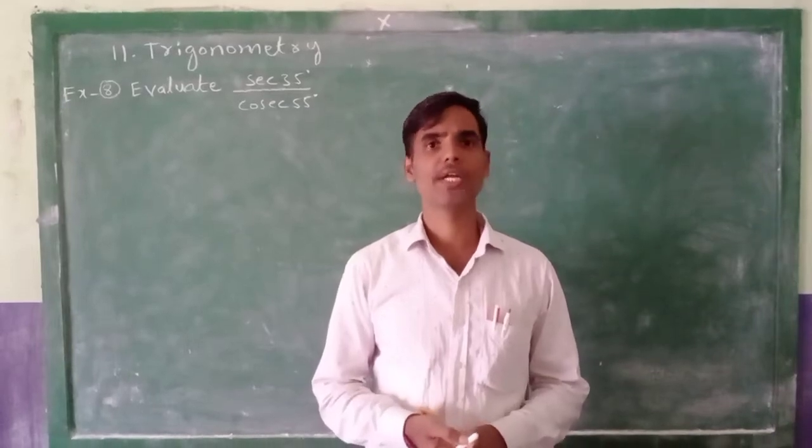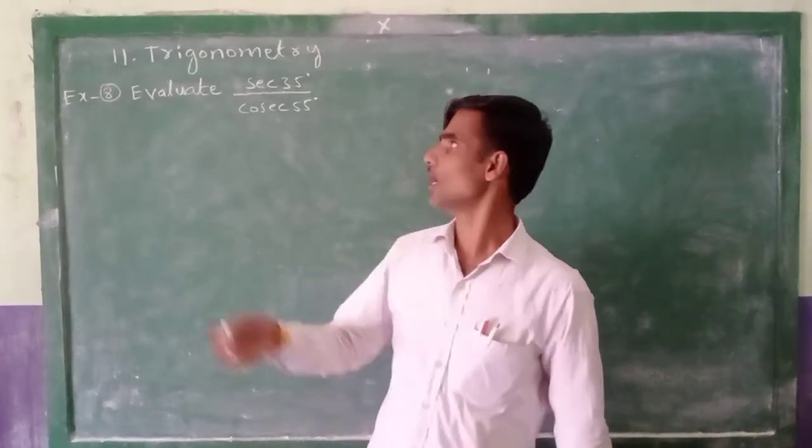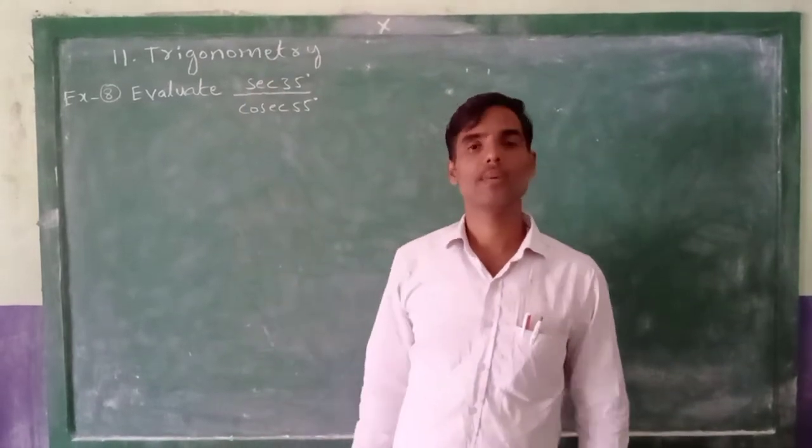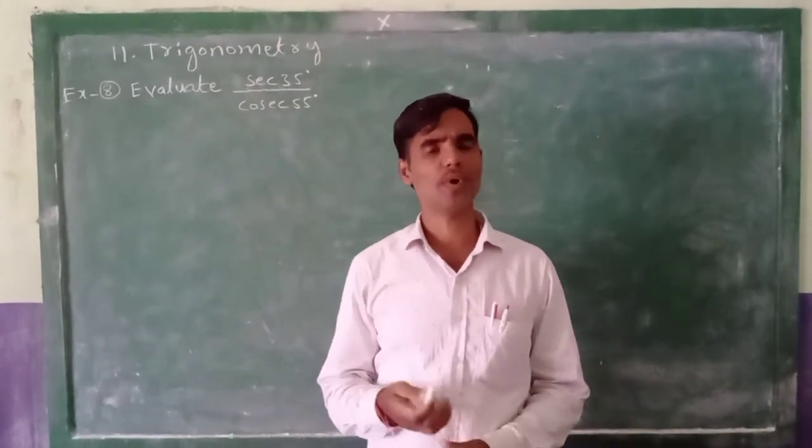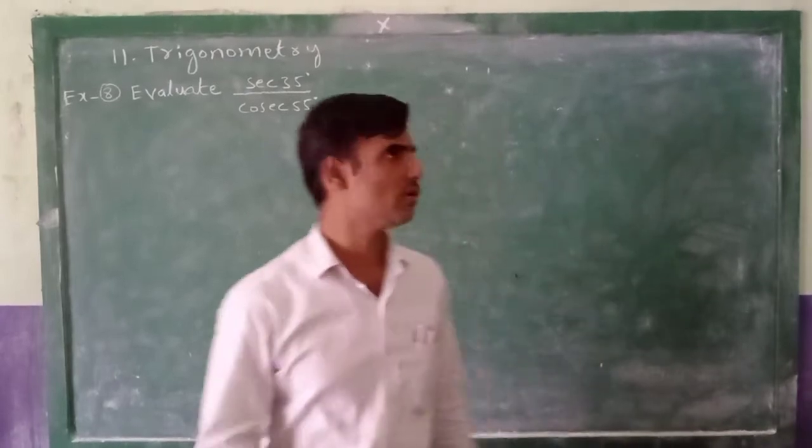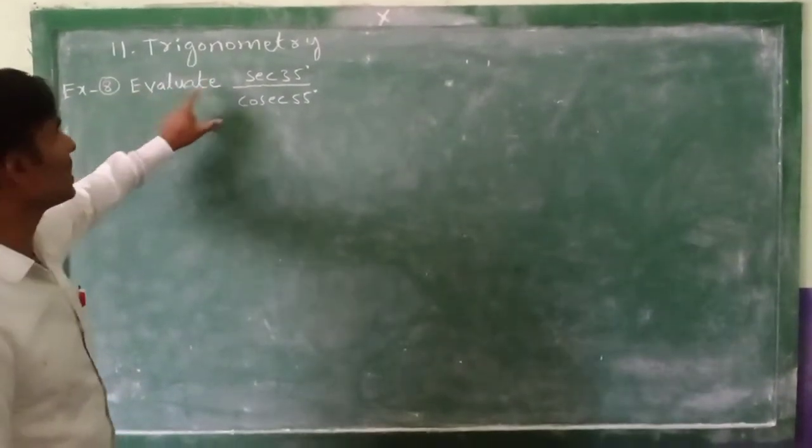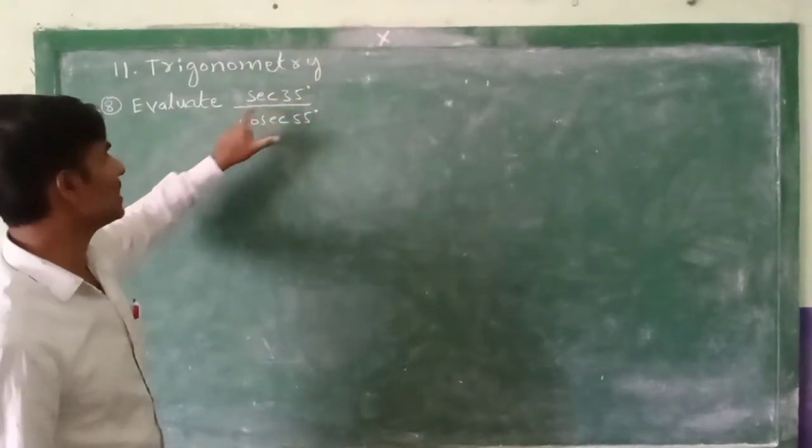Now we are discussing 10th class, chapter 11, Example 8. In previous classes we discussed examples 1 to 7. Now we are discussing Example 8: Evaluate secant 35 degrees